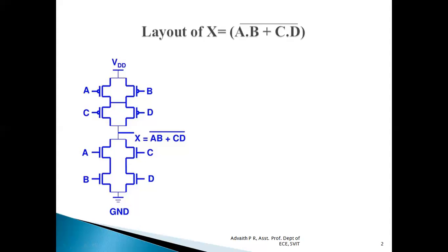The key point to remember is: for dot operation, pMOS transistors are always connected in parallel and nMOS transistors are always connected in series. For plus operation, pMOS transistors are always connected in series, whereas nMOS transistors are always connected in parallel.